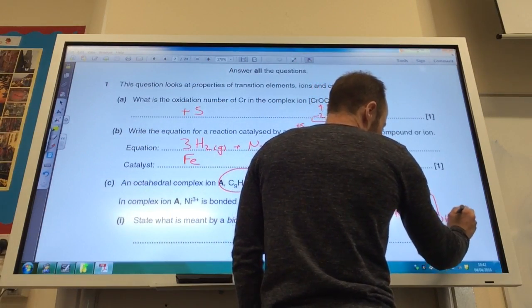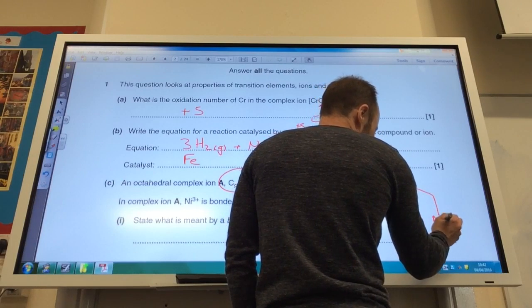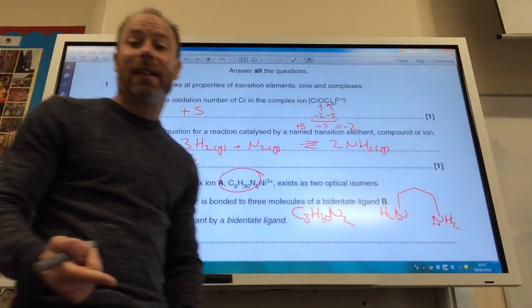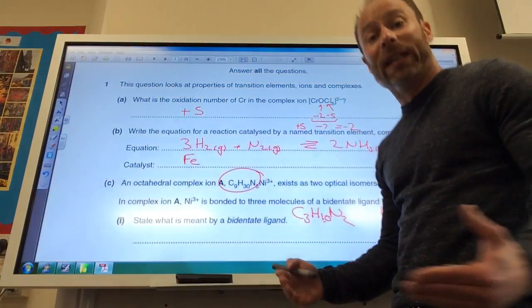and then you're going to have two hydrogens on each nitrogen. And obviously, the main thing is you've got your lone pair on those nitrogens, because they are going to act as the ligand.